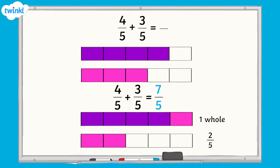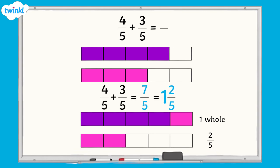Five-fifths makes one whole, so we can take five of the seven-fifths to make one whole, and we're left with two-fifths. Four-fifths plus three-fifths equals seven-fifths, which equals one and two-fifths.